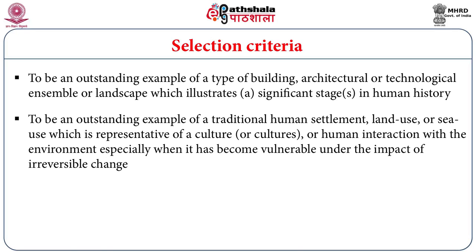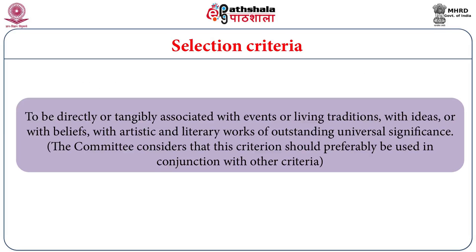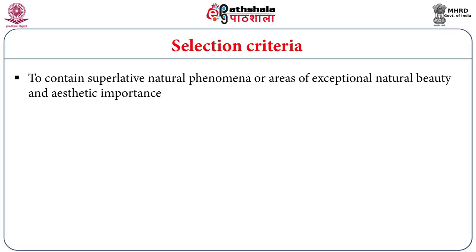The fifth criteria is to be an outstanding example of traditional human settlement, land use or sea use, representative of a culture or group of cultures, especially when it has become vulnerable under the impact of irreversible change. Another criteria is to be directly or tangibly associated with events or living traditions, with ideas or beliefs, or with artistic or literary work of outstanding universal significance of a particular place or community. The seventh criteria is to contain superlative natural phenomena or areas of exceptional natural beauty and aesthetic importance.